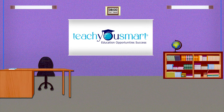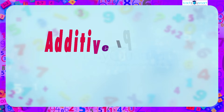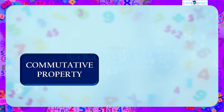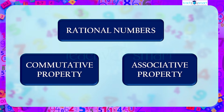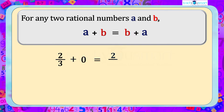Hello students, welcome to Teach You Smart. Let's continue our journey through rational numbers. Today we are going to discuss additive identity and additive inverse. In our previous sessions we discussed the commutative property and the associative property of rational numbers. The commutative property of rational numbers for addition says that for any two rational numbers a and b, a plus b equals b plus a.